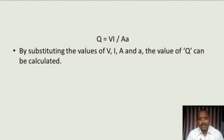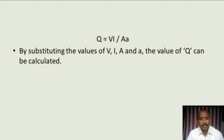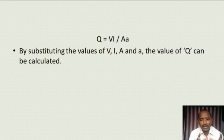The solar constant is the amount of solar radiation received on the earth's surface per unit area per unit time. Its value is found to be 1347 watts per meter squared, and it can be calculated using this formula.